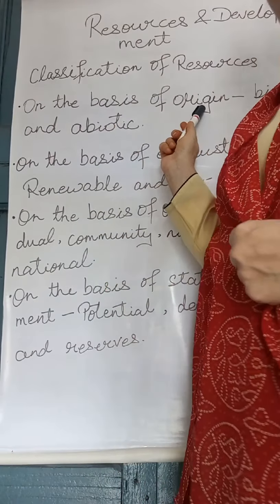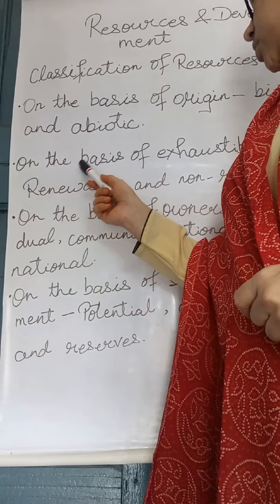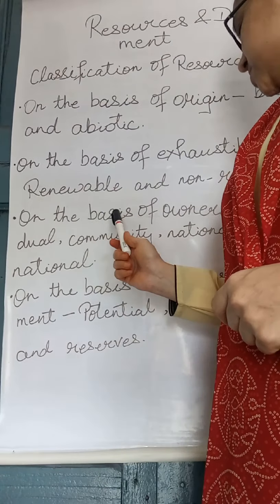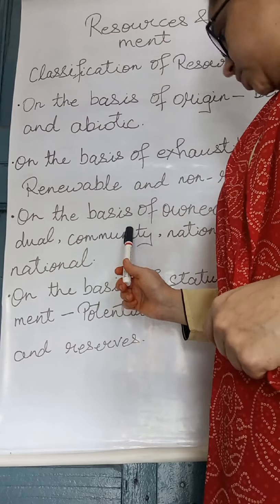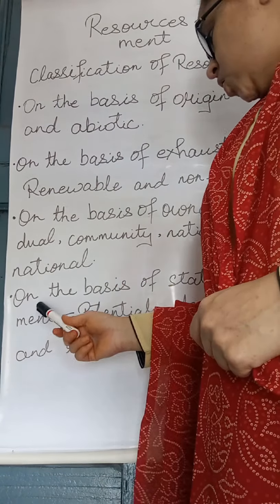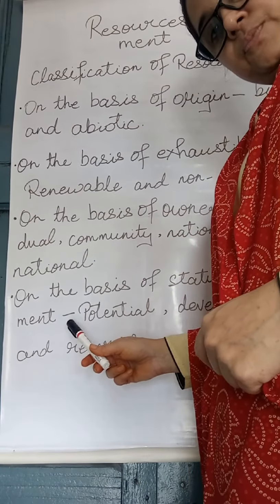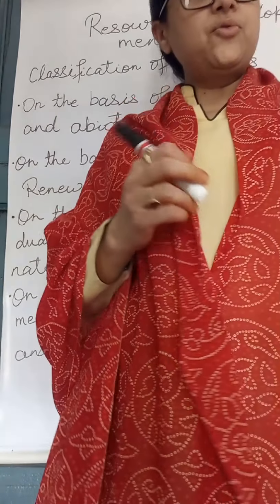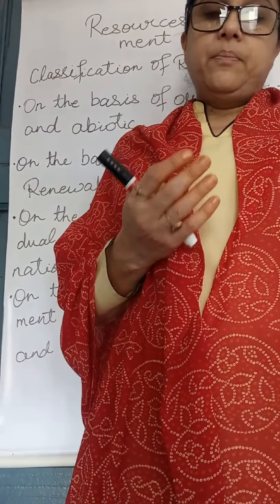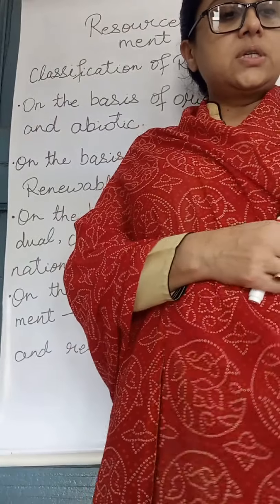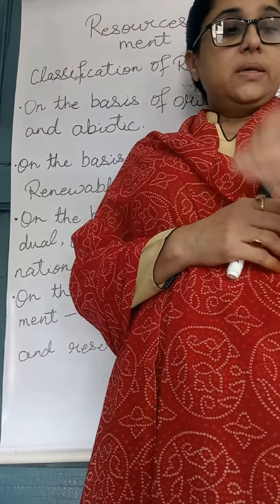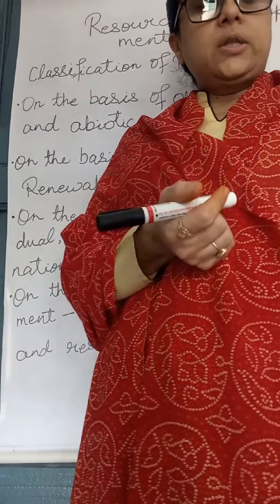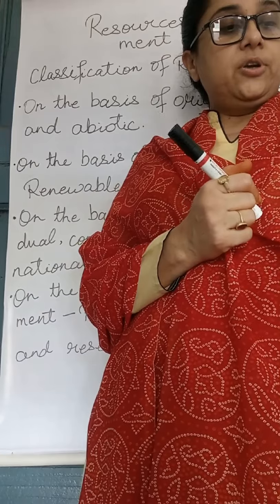Resources are classified on the basis of origin — that is biotic and abiotic. On the basis of exhaustibility — that is renewable and non-renewable. On the basis of ownership — that is individual, community, national and international. On the basis of status of development — that is potential, developed, stock and reserves. Resources are of many types like plant resources, soil resources, animal resources, mineral resources, etc.